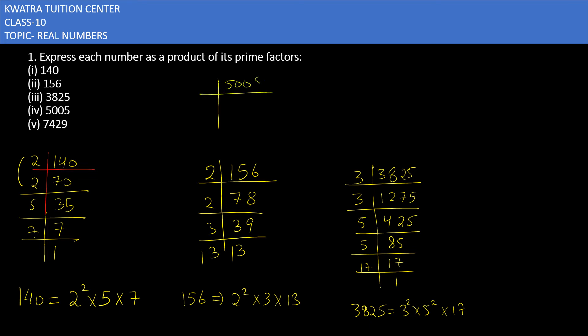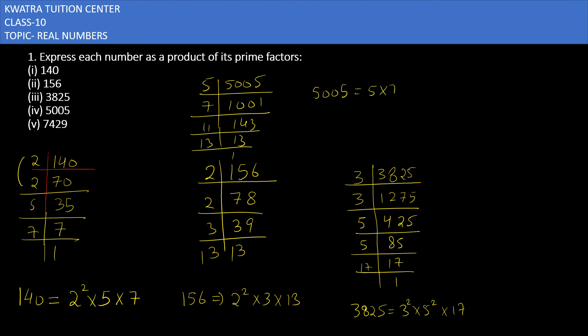The next one is 5005. It is divisible by 5 first, giving 1001. Then 1001 is divisible by 7, giving 143. Then 143 is divisible by 11, giving 13, and ending with 13. So 5005 can be written as 5 into 7 into 11 into 13.